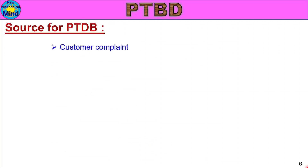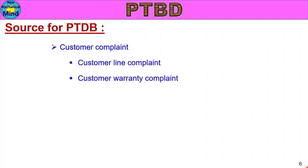Next is the source for the Past Trouble Database. Sources include: customer complaints — customer line complaints and customer warranty complaints. For these, we analyze root cause and access the data for the Past Trouble Database.